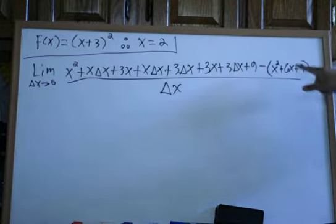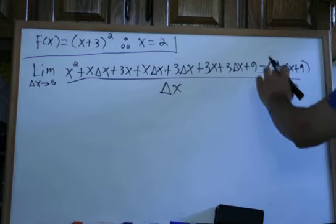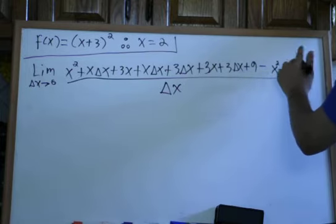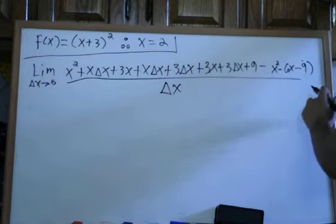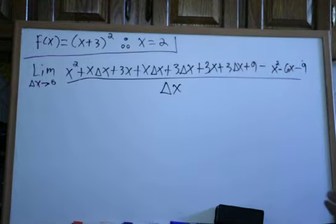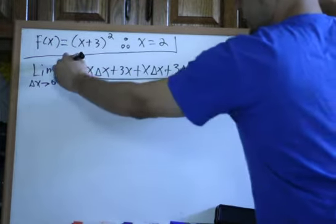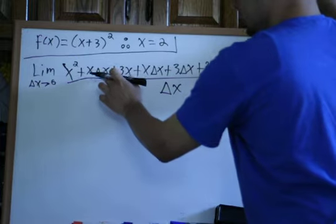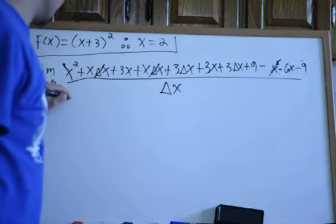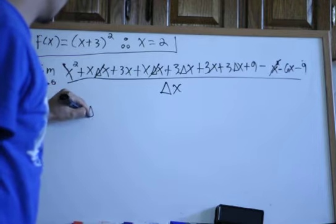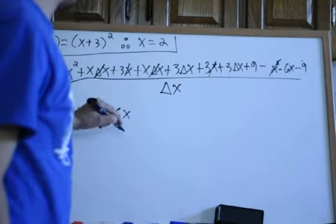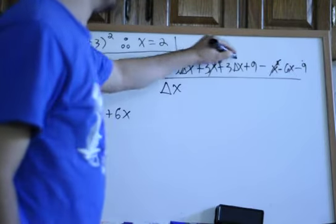Distributing the negative gives minus x squared minus 6x minus 9. Now we take care of like terms: the x squared terms cancel. We have x·delta x + x·delta x giving 2x·delta x. The 3x + 3x gives 6x, and 3·delta x + 3·delta x gives 6·delta x.